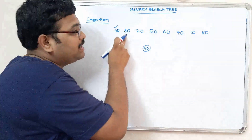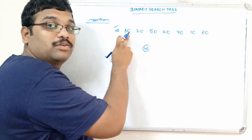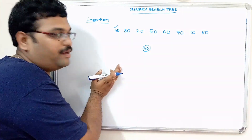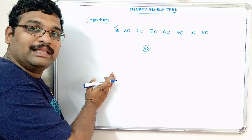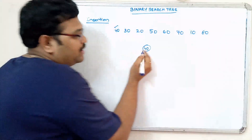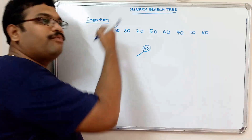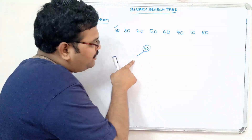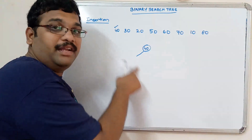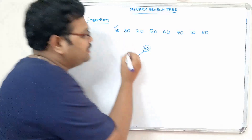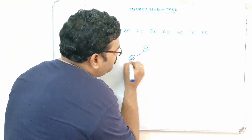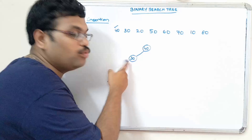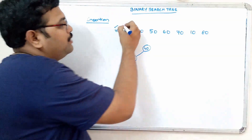Next, 30 is less than 40. So 30 will be placed at the left subtree. In the left subtree, again we follow the same procedure. Since the left subtree is empty, consider 30 as the root element of the left subtree.